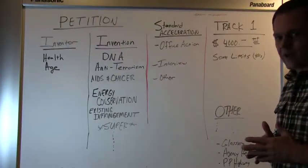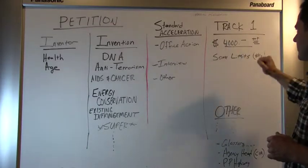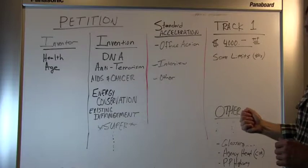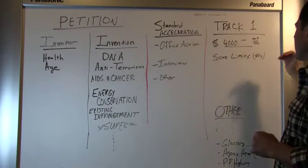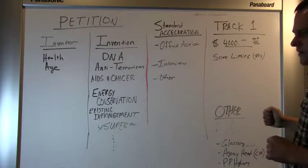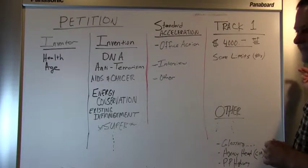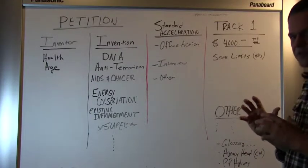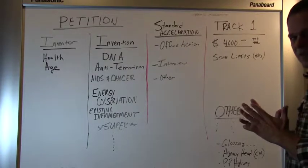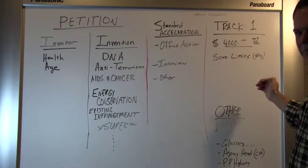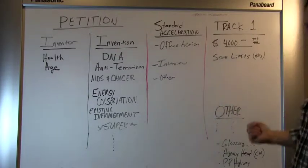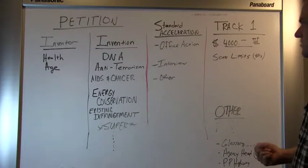The other way to accelerate an examination under formal examination is called track one. No, there's not a track two. Under track one, you simply pay a higher fee. And what makes this one interesting is that at least up until this year, there have been some limitations on the numbers of applications that qualify for track one examination each year.